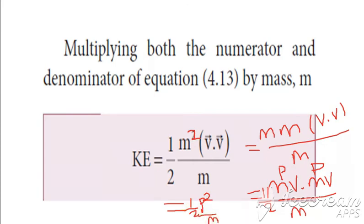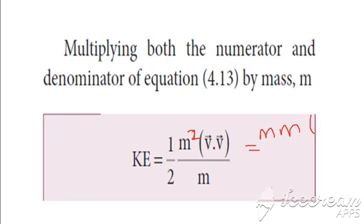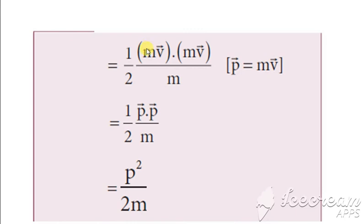So this gives a relation between kinetic energy and momentum. The main formula you have to know is P equals MV and kinetic energy equals half MV square. This is how we write MV into MV. So MV equals P, and we write as P into P divided by M, which becomes P square divided by 2M.